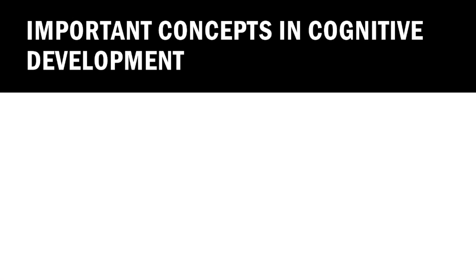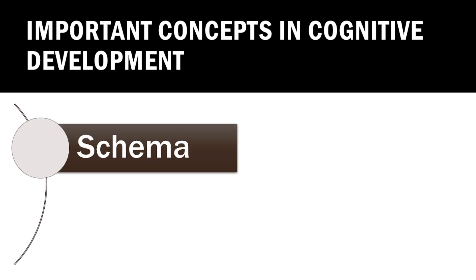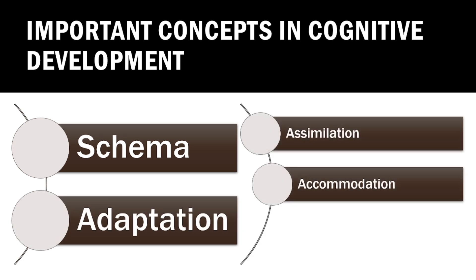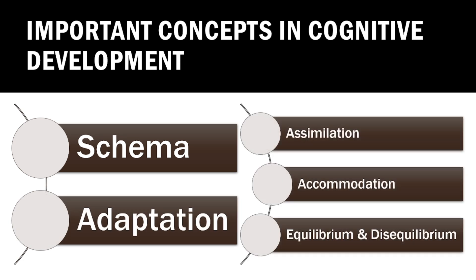Piaget identified several key concepts to explain cognitive development. We'll cover schema, adaptation, assimilation, accommodation, equilibrium, and disequilibrium. Each one plays a vital role in how children process and organize knowledge. Think of these as building blocks for learning. As future teachers, how might these help you approach your classroom?